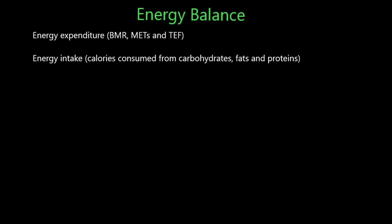One of the big problems we have globally, but in particular in this country, is people being obese and overweight. But equally, people being underweight, having conditions like anorexia and bulimia. So what we have is energy balance — how is our weight basically achieved? We have energy expenditure: our BMR, our METs and the thermic effects of food — the amount of calories it takes to digest and absorb food.